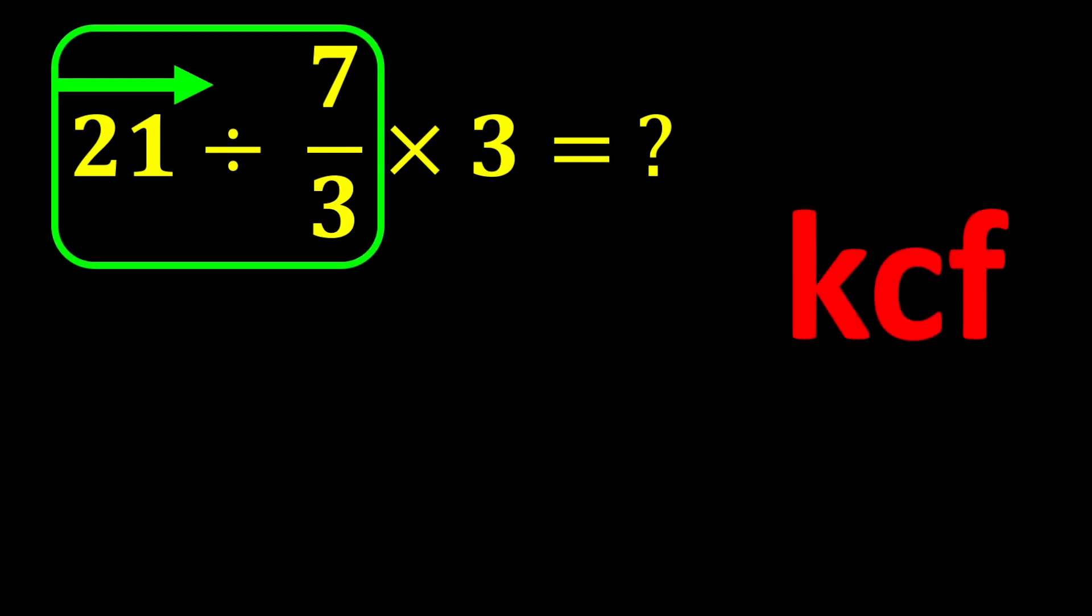To solve this part, we use the KCF rule. K stands for keep, C stands for change, and F stands for flip. The KCF rule is a simple rule for dividing fractions. According to this rule, we keep the first number as it is, change the division sign to multiplication, and flip the second number.